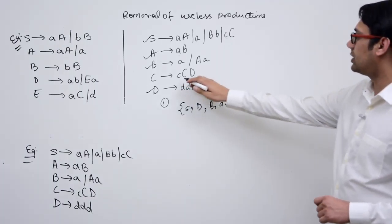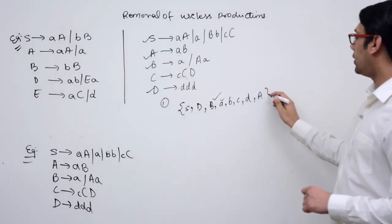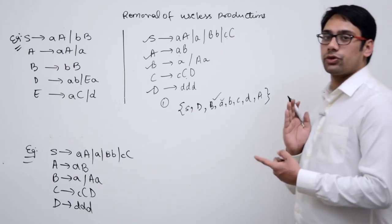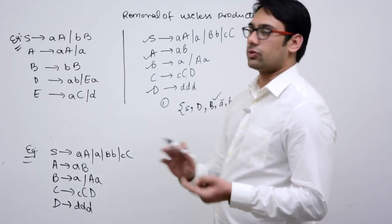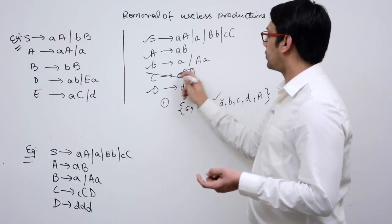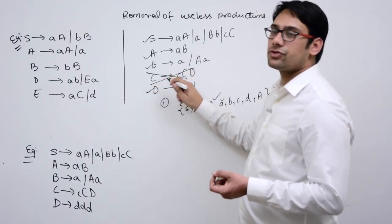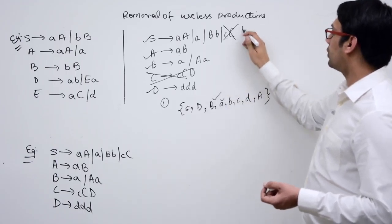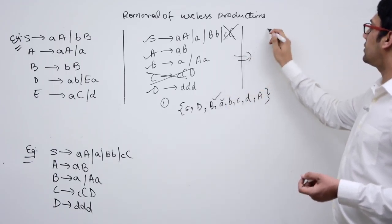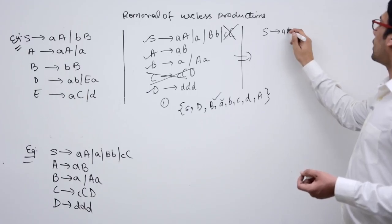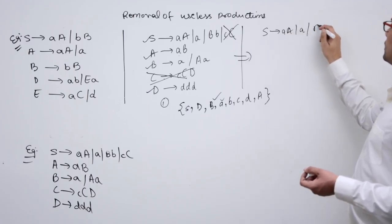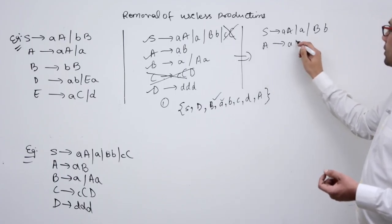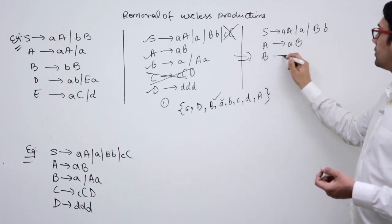Small c is useful as a terminal, but capital C is not proven to be useful at all. All symbols proven to be useful are kept; those not proven useful are removed. We remove capital C and any reference to it.